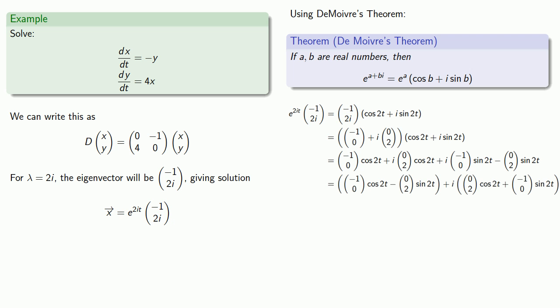And so now we've written our solution e to power 2i t times a vector in terms of a sum of a real part, which we can write as a single vector, plus a complex part, which we can write as i times a single vector.